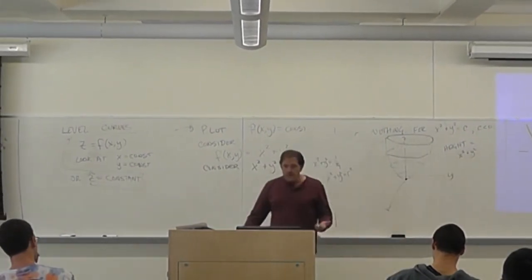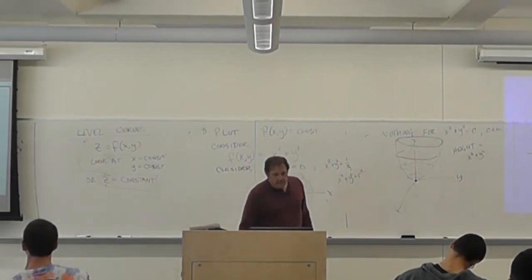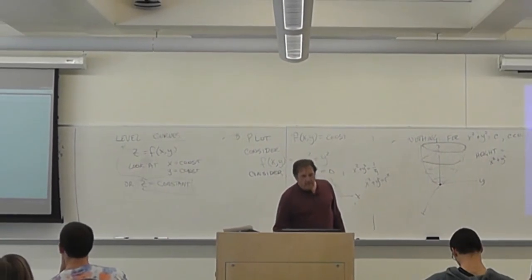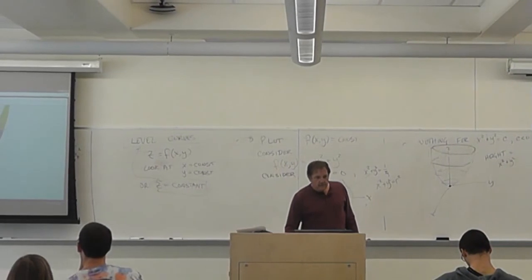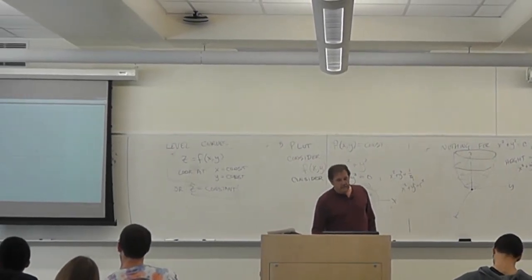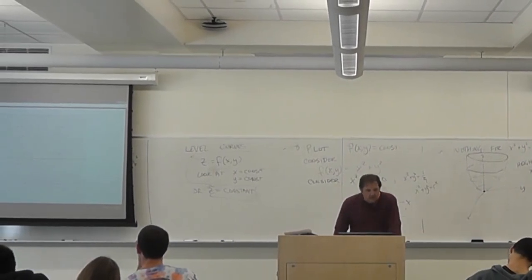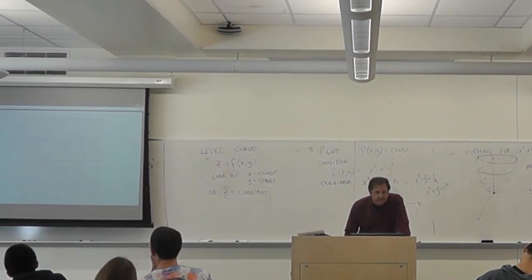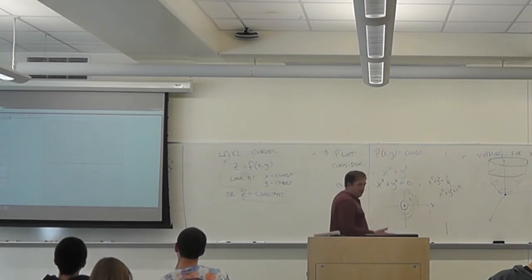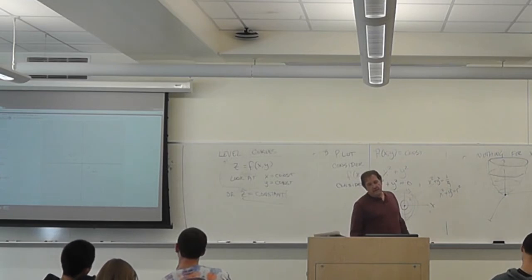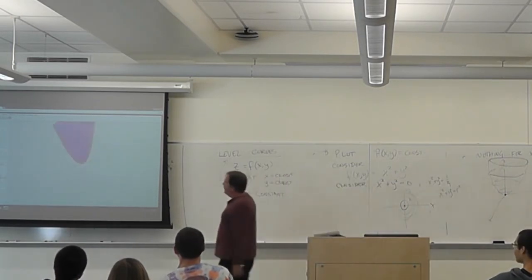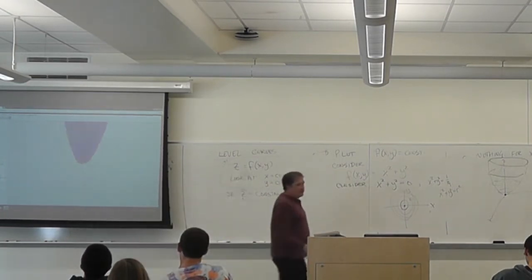Yes — holding z constant is exactly like a topographic map. Let me show the contours on the computer: there's the paraboloid with contours — a collection of circles at constant height. If I click on it, it shows the surface spinning around with contours labeled. It's exactly like a topographic map. If you look from the top, you see the topographic map; if you look from the side, you see the surface.